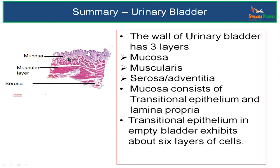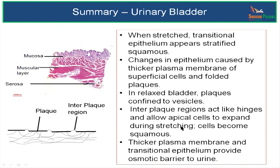Mucosa has transitional epithelium or urothelium and a lamina propria. Transitional epithelium in an empty bladder has about 6 layers of cells. When stretched, the transitional epithelium appears stratified squamous. The changes in epithelium — from umbrella cells or dome-shaped cells in the surface layer to squamous cells — are because of the thicker plasma membrane of superficial cells and folded plaques.